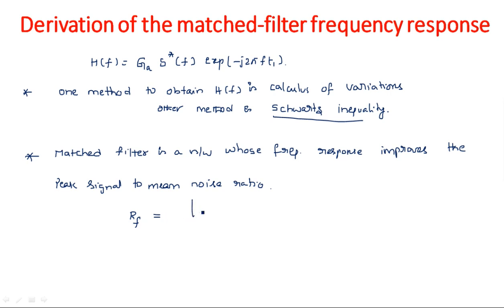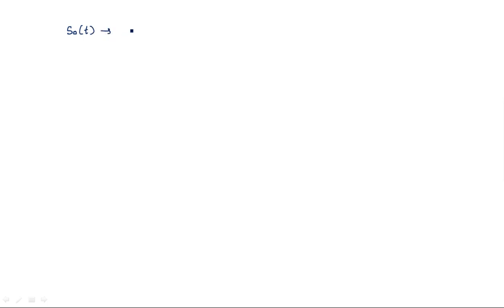We define the ratio RF as the peak signal to mean noise ratio: RF = |s₀(t)|²_max / N. Here N is the mean noise and s₀(t) is the output signal — the received signal s(t) after passing through the receiver becomes s₀(t). We take the maximum (peak) value of this output signal.